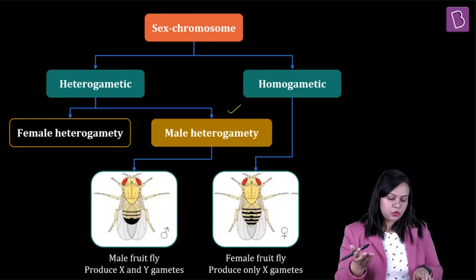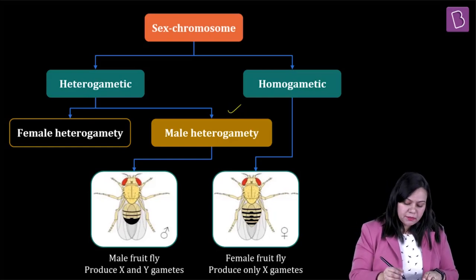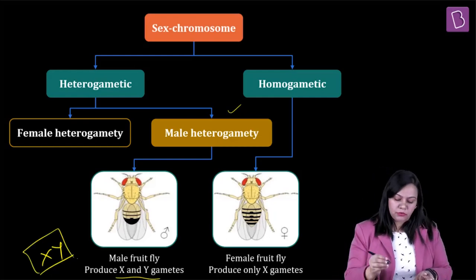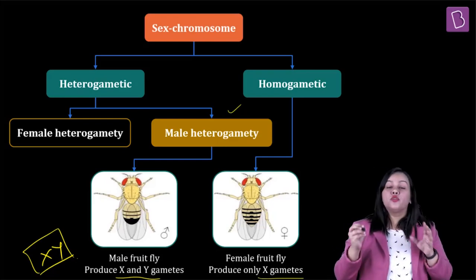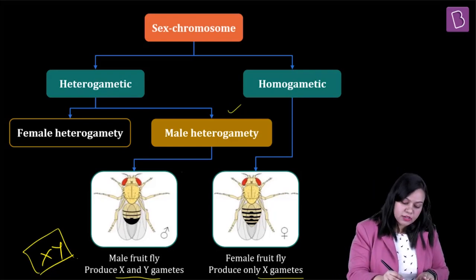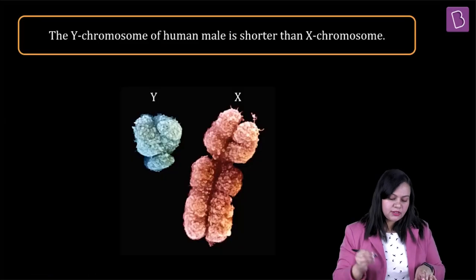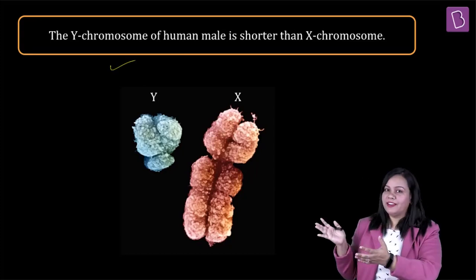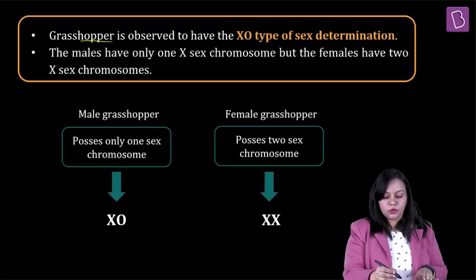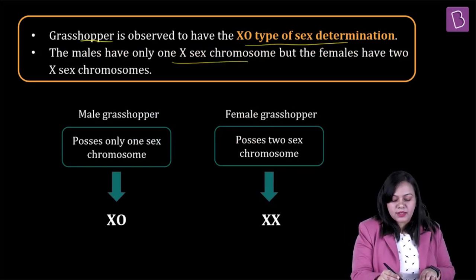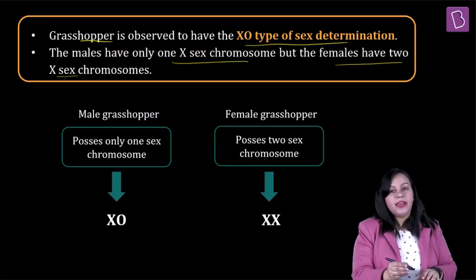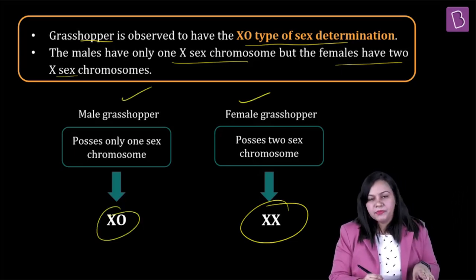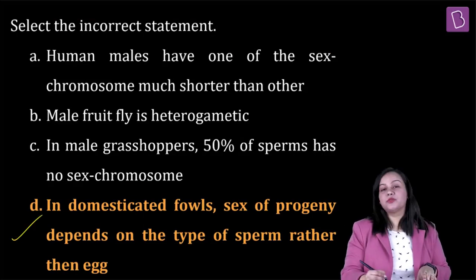Male heterogamety in humans has already been discussed. In Drosophila fruit fly, males are XY type, producing X and Y type gametes; females produce only X-type gametes, so females show homogamety and males show heterogamety. Also, the Y chromosome of human males is much shorter than the X chromosome. In grasshoppers, XO type sex determination means males have only one sex chromosome (X), while females have XX. For all these reasons, the right answer is option D.